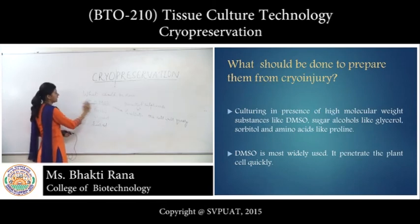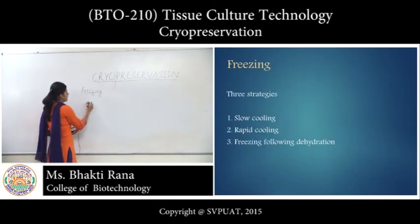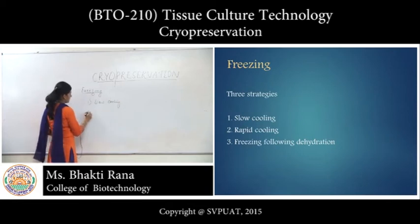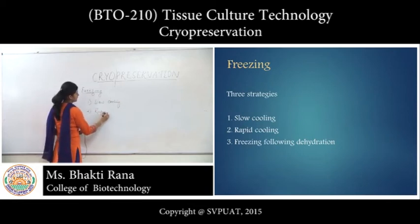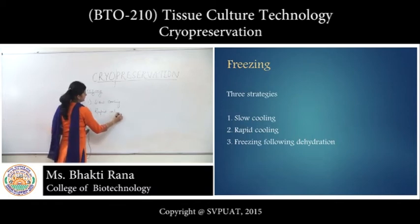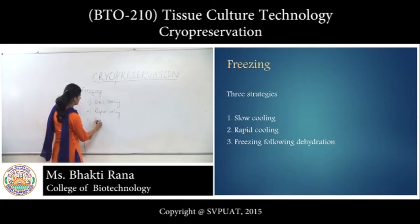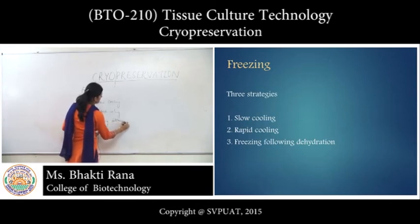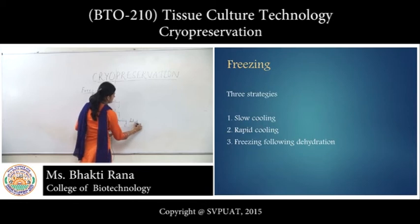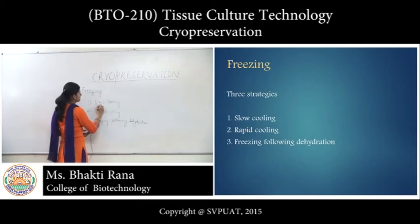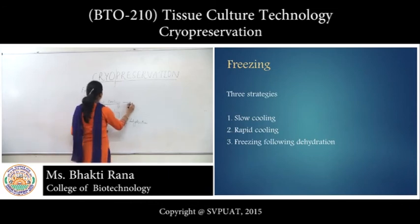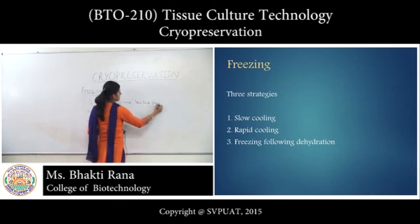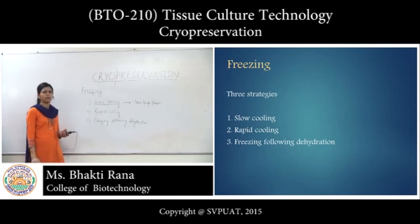You can use DMSO during the culture. Next is freezing. Freezing can be done by slow cooling, rapid cooling, or freezing following dehydration. Under slow cooling, you first freeze the material at a low temperature and then place it in liquid nitrogen.